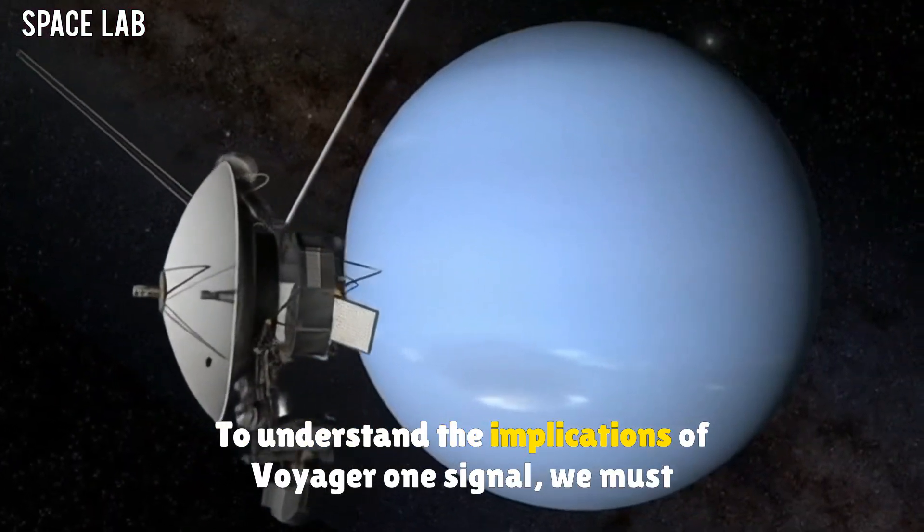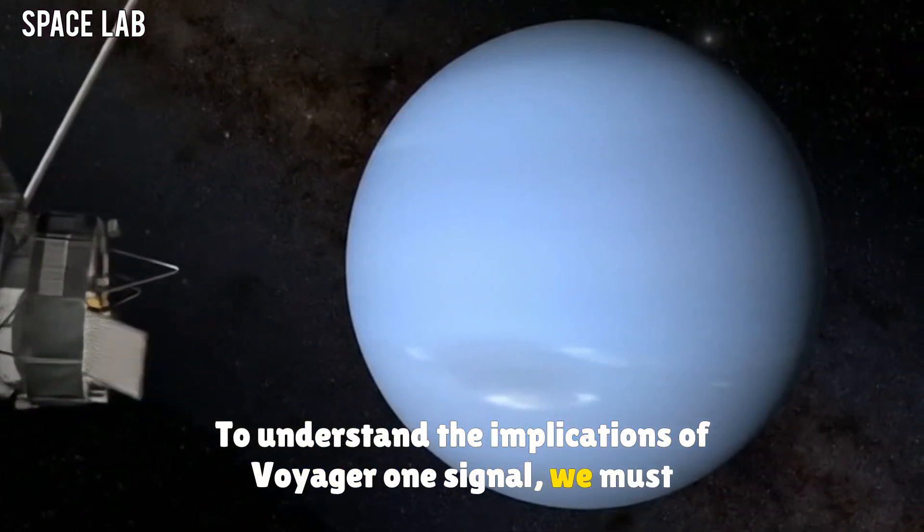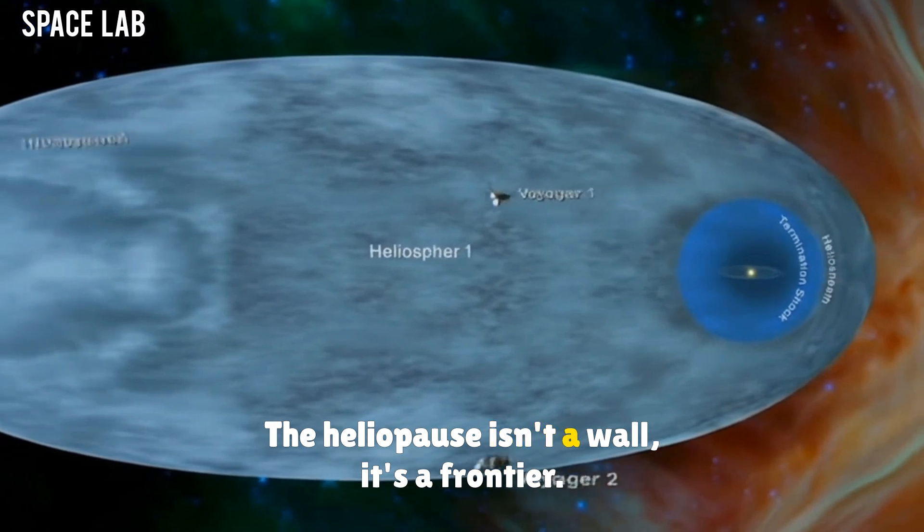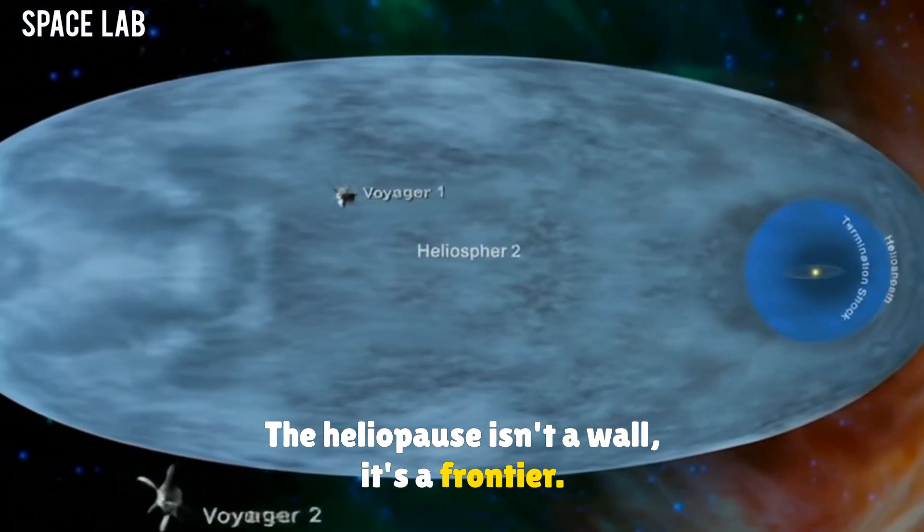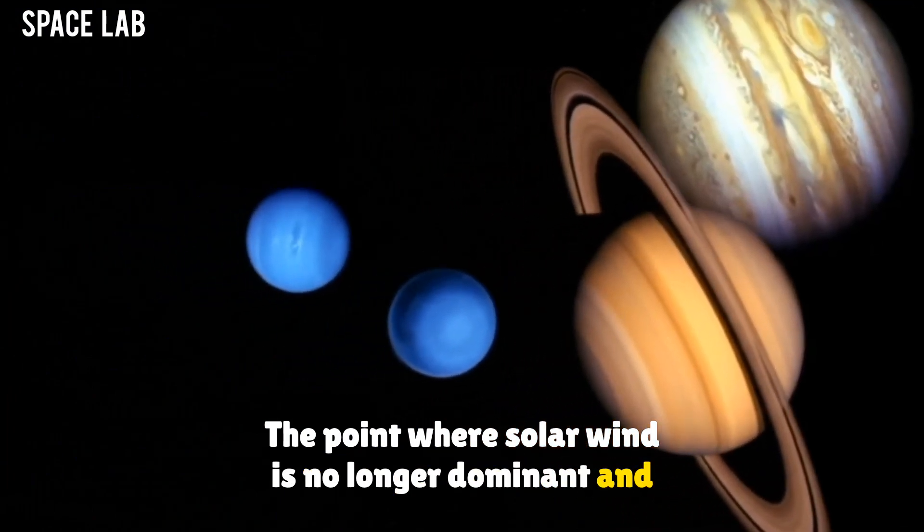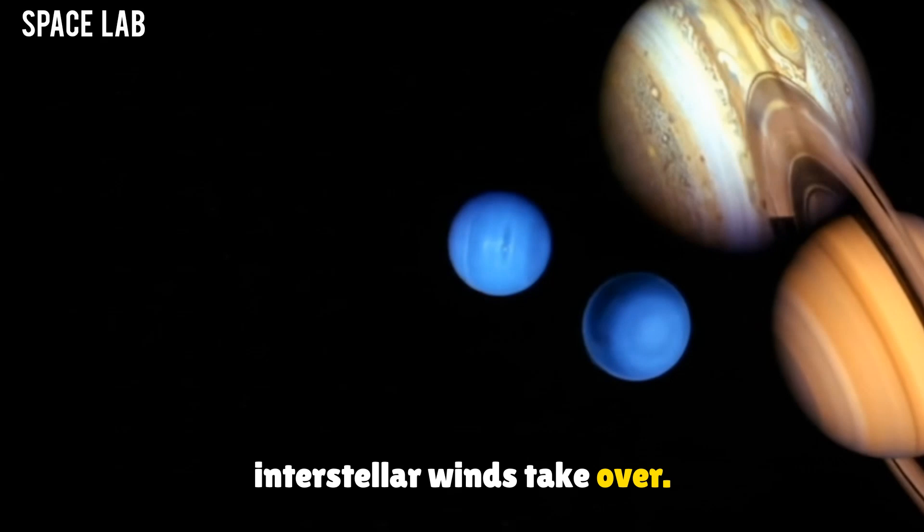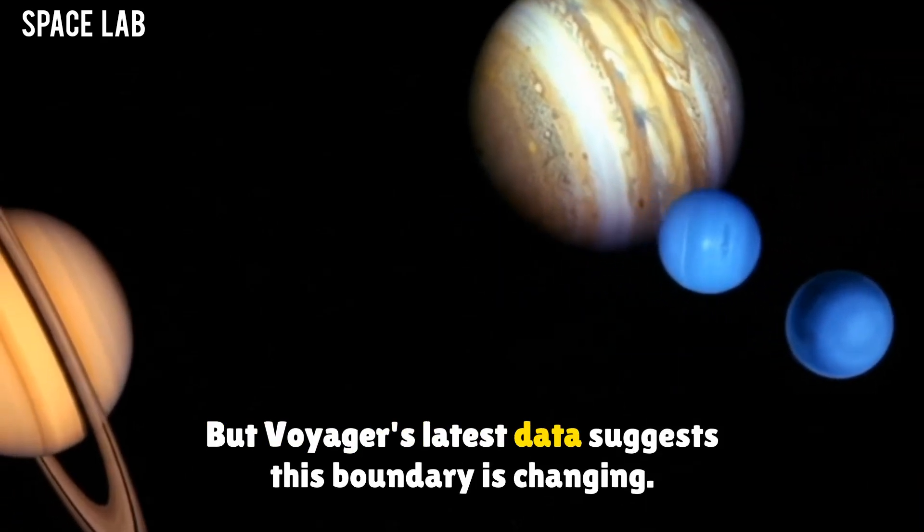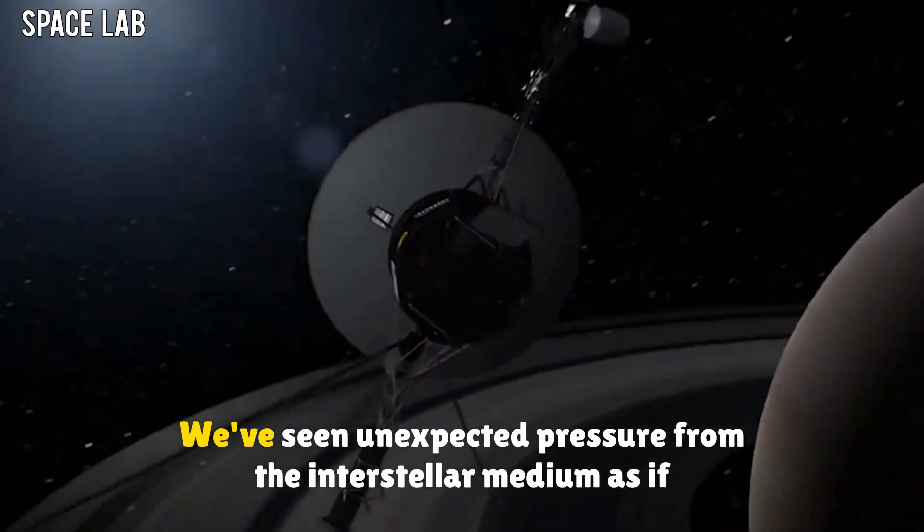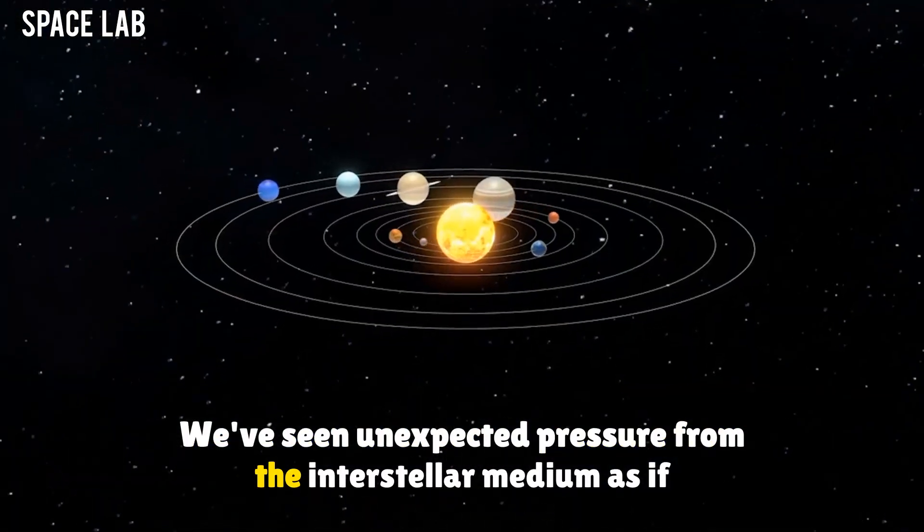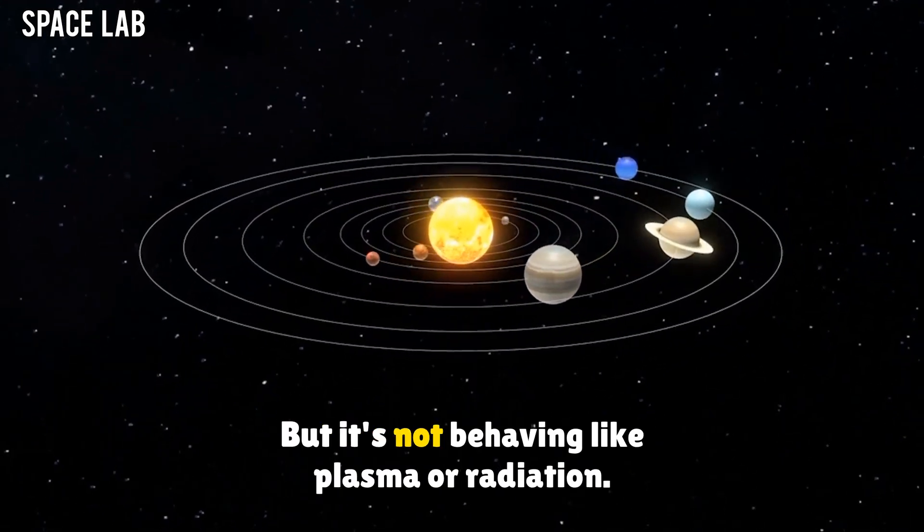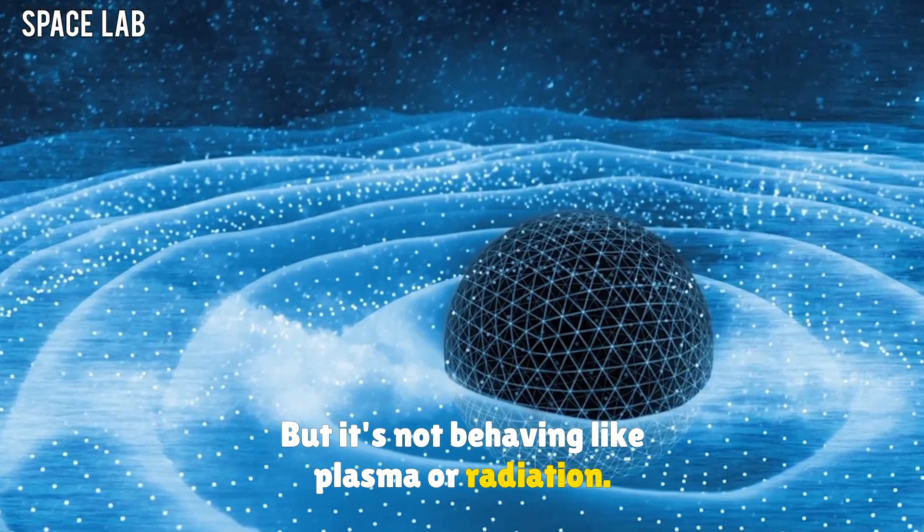To understand the implications of Voyager 1's signal, we must understand where it is. The heliopause isn't a wall. It's a frontier. The point where solar wind is no longer dominant, and interstellar winds take over. But Voyager's latest data suggests this boundary is changing. We've seen unexpected pressure from the interstellar medium, as if something is pushing back. But it's not behaving like plasma or radiation. It's structured.